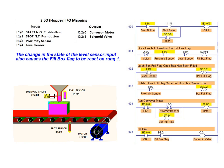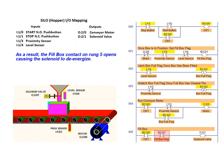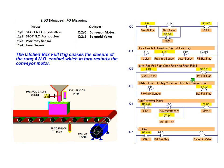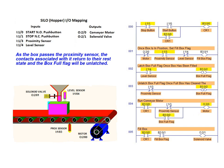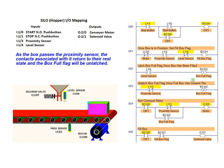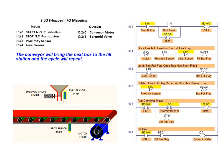This change in state of the level sensor input also causes the fill box flag to be reset on rung 1. As a result, the fill box contact on rung 5 opens, causing the solenoid to be de-energized. The latching of the box full flag causes the closure of the rung 4 NO contact, which in turn restarts the conveyor motor. As the box passes the proximity sensor, the contacts associated with it return to their rest state, and the box full flag is unlatched. The conveyor will now bring the next box to the fill station, and the entire cycle will be repeated.